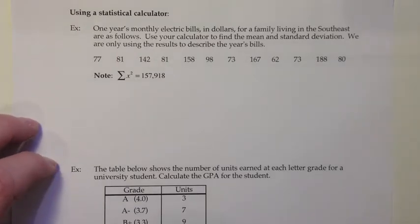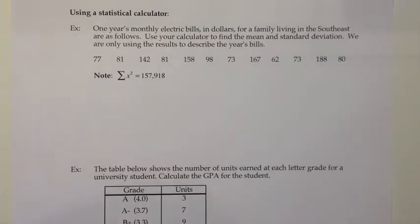So let's look at this first example. One year's monthly electric bills in dollars for a family living in the southeast are as follows. Use your calculator to find the mean and standard deviation. I'm going to pause right there for a second. When they say use the calculator to find the mean and standard deviation, we actually don't know what kind they mean. That could be sample mean and sample standard deviation or it could be population mean and population standard deviation. So let's read on.